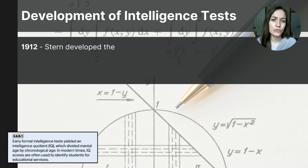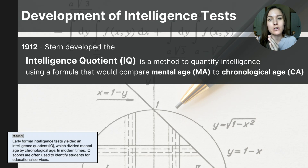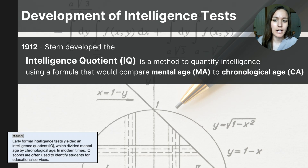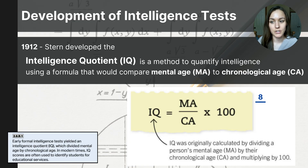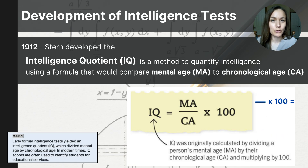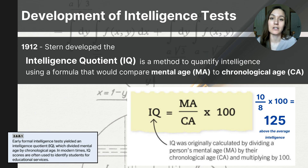In 1912, William Stern introduced the concept of the intelligence quotient, or IQ, as a way to quantify intelligence. Stern's formula compared mental age (MA) to chronological age (CA) to provide a numerical value for intelligence. To calculate IQ, an individual's mental age is determined through a standardized test, then IQ is calculated by dividing mental age by chronological age and multiplying by 100. For example, a child with a mental age of 8 and a chronological age of 8 would have an IQ of 100. If a child's mental age is 10 and chronological age is 8, dividing 10 by 8 and multiplying by 100 gives 125, indicating above average intelligence.